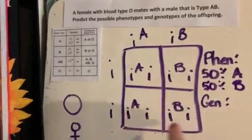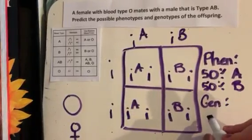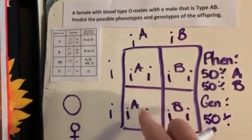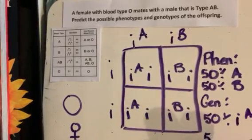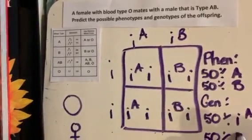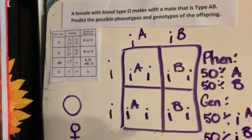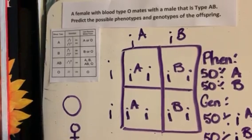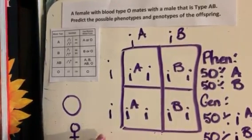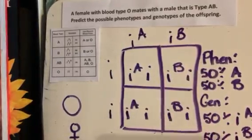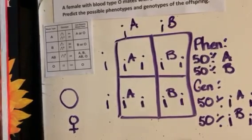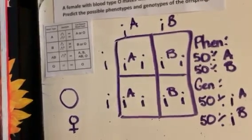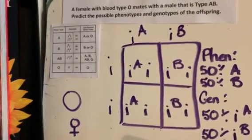What's their genotype? 50% of them — two of the four — are going to be heterozygous for A blood, and 50% are going to be heterozygous for B blood. What's crazy about this is none of the offspring will have the same blood type as their parents. The parents were O and AB, yet the children can only be A or B. I hope this has helped with doing Punnett squares for blood typing.